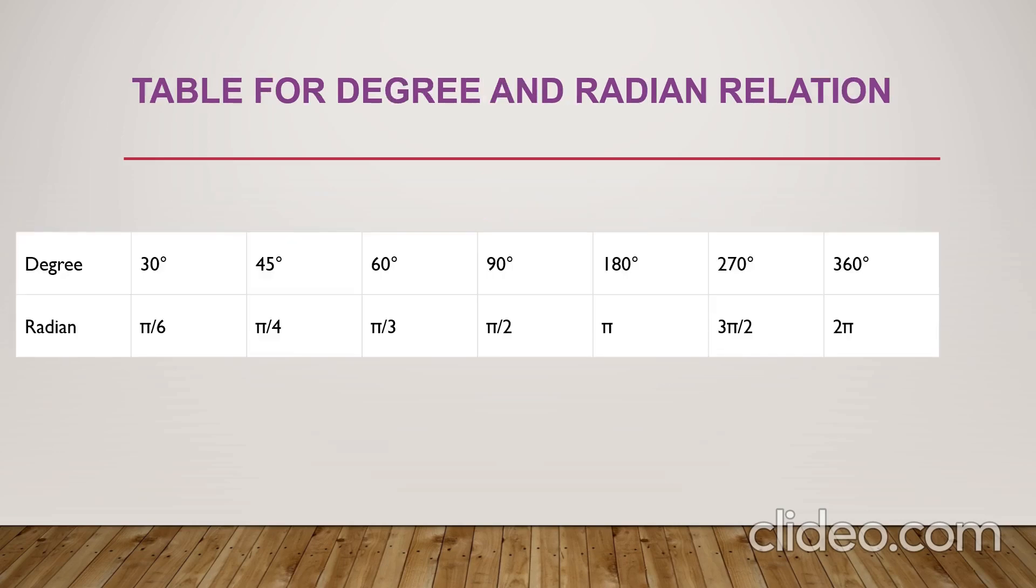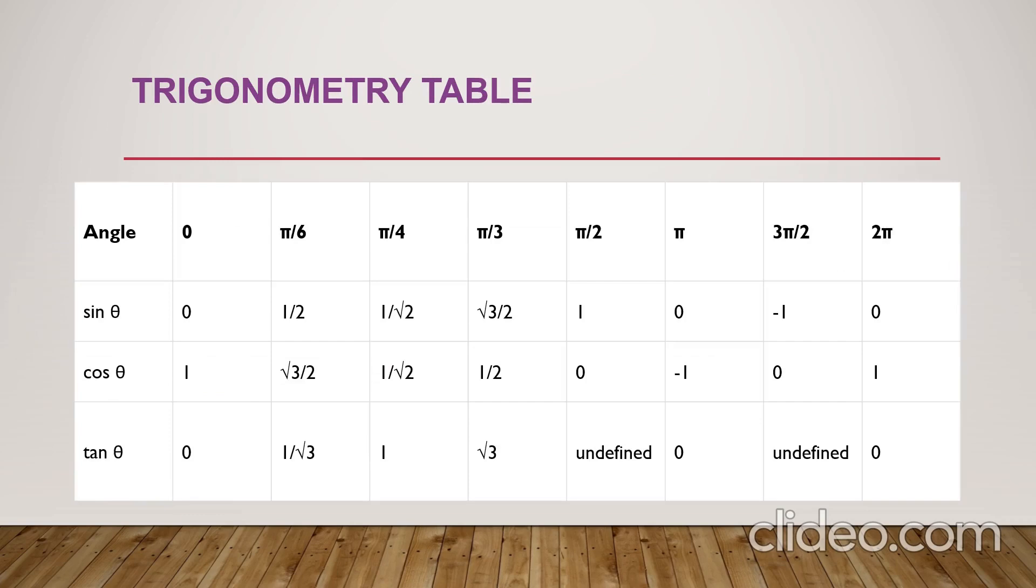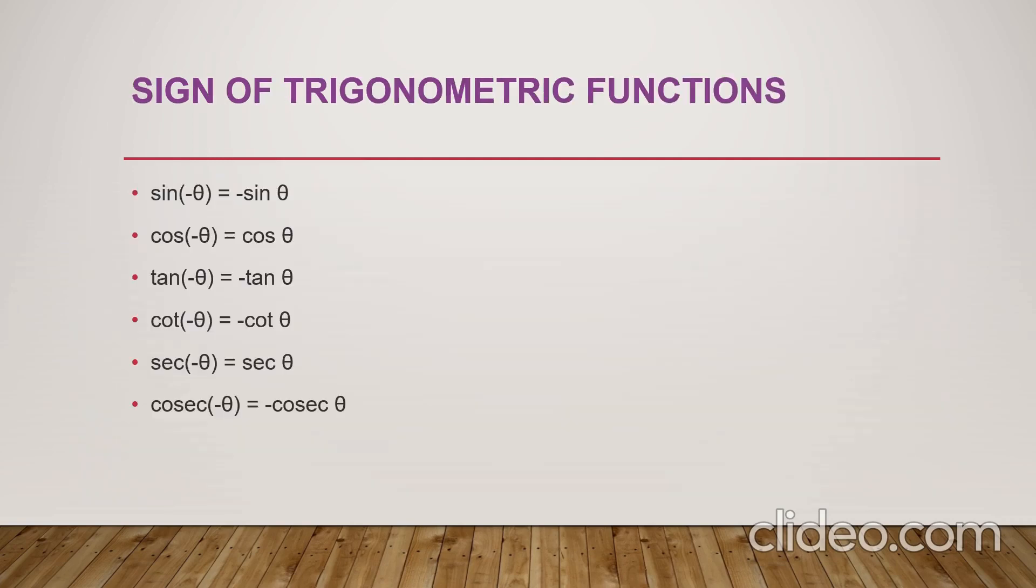You know 30, 45, 60, 90 degrees. If I multiply 30 degrees by pi by 180, you get pi by 6. Similarly, 45 degrees into pi by 180 gives pi by 4. In the same manner, you can get different values of radian for given degree values. Now you know this table: sin 0 is 0, sin 30 is 1 by 2, sin 45 is 1 by root 2. You know this table already.